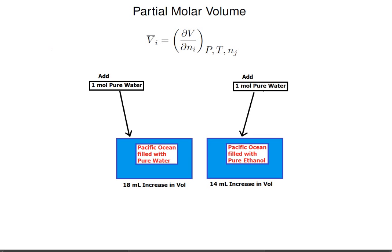If one mole of water is added to an ocean of water, the volume goes up by 18 cubic centimeters. However, if one mole of water is added to an ocean of ethanol, the volume goes up by only 14 cubic centimeters. We are looking for a function that describes the change in volume as a function of the amount of substance added, when keeping the moles of the other things in the mixture constant.